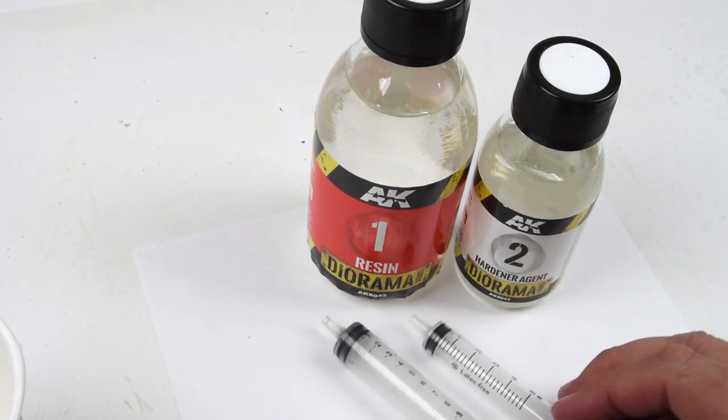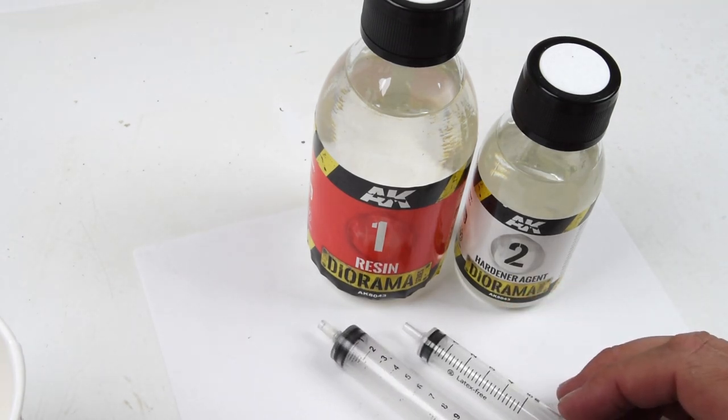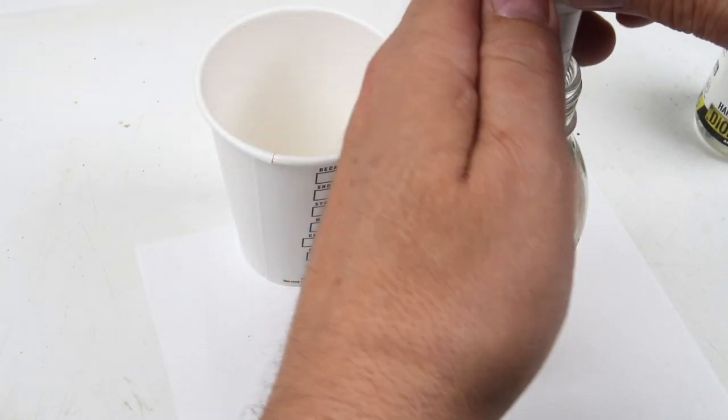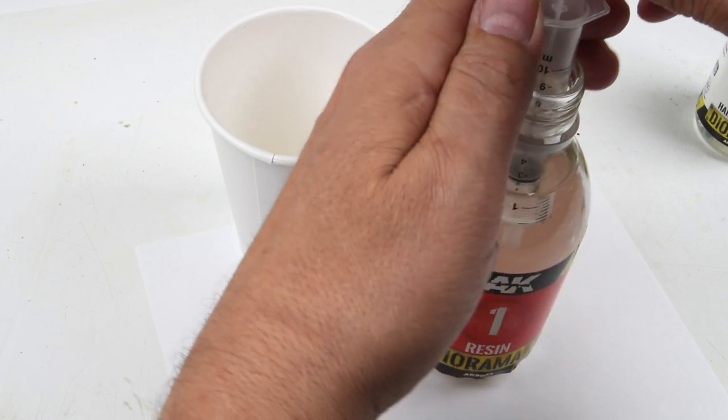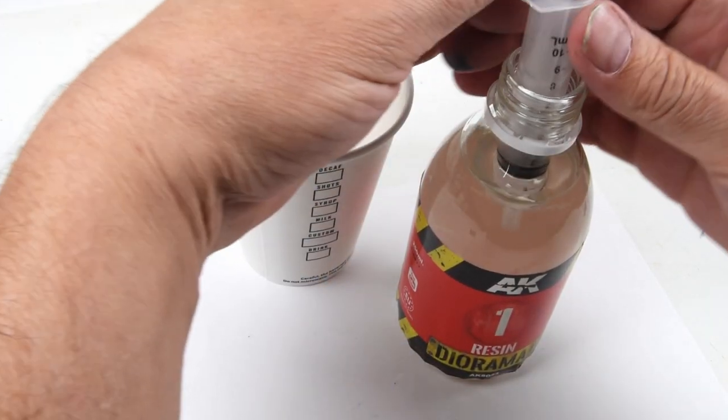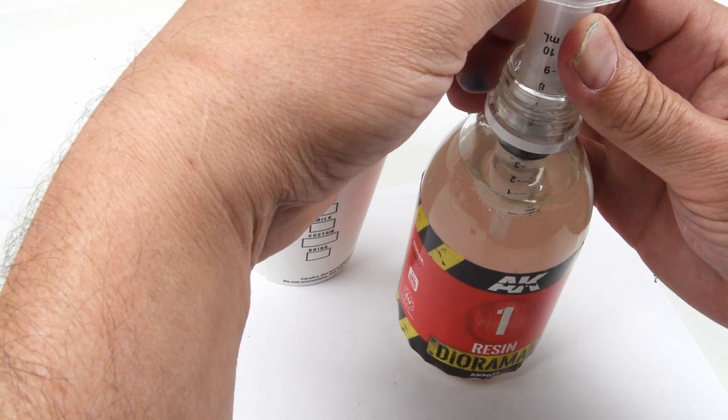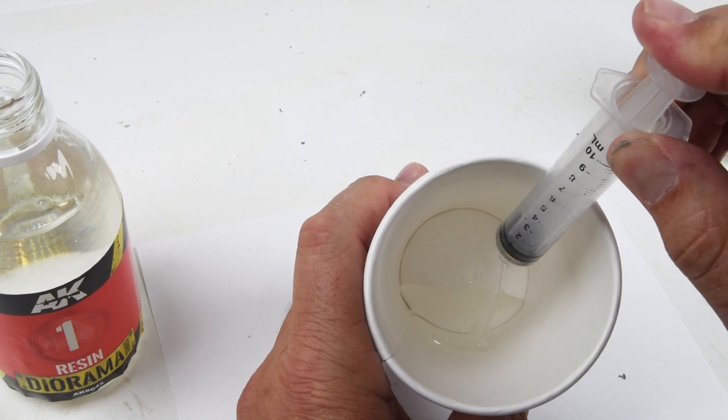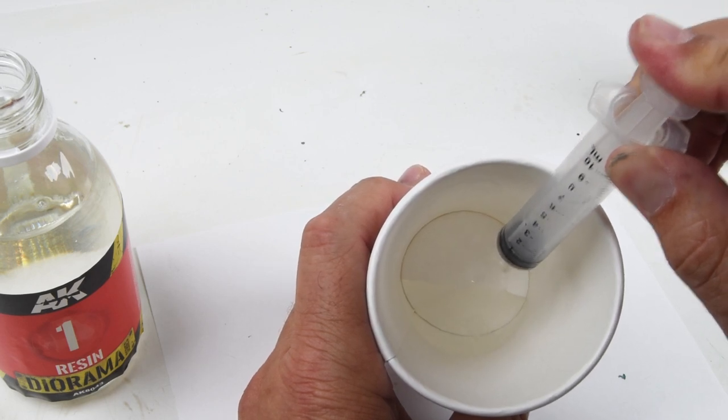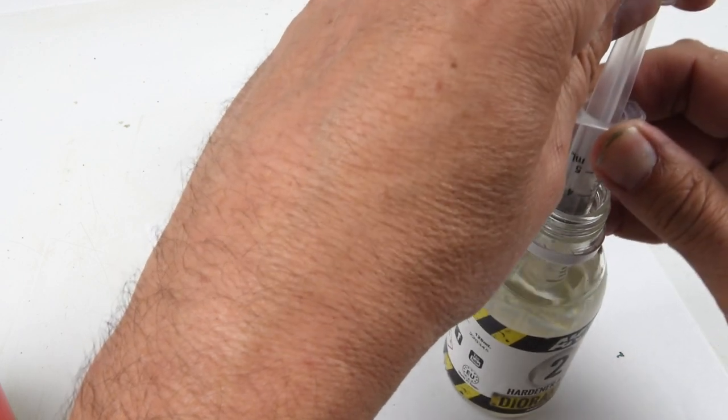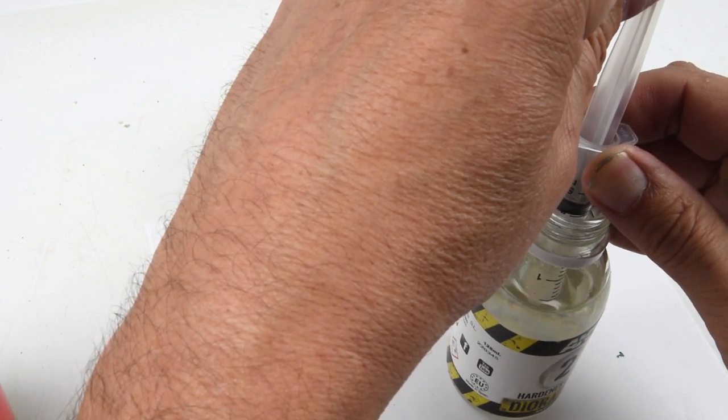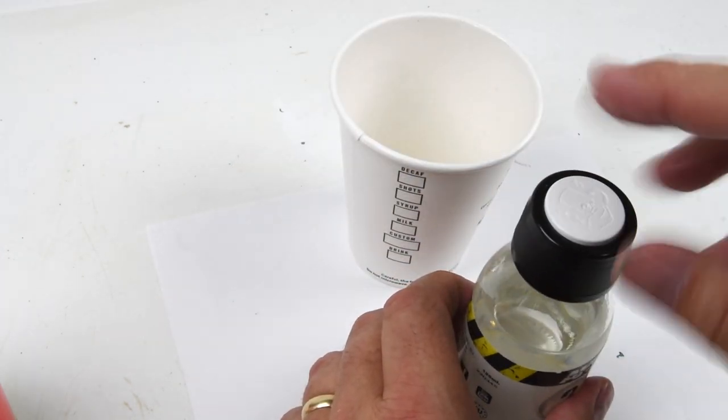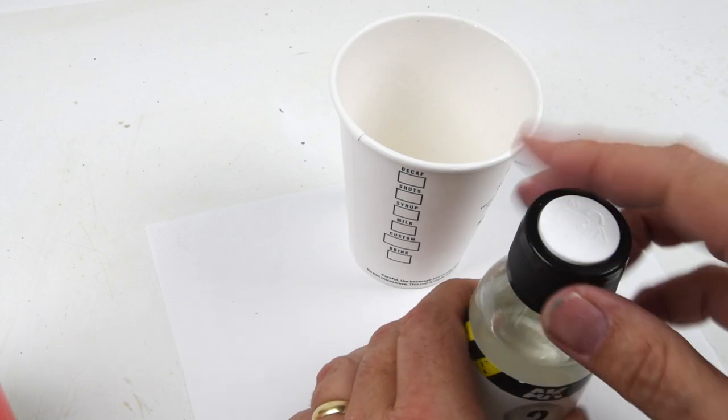Now if there was any time to really worry about me and how I approach things, it's going to be now because now we're working with resin. And this has got chemistry, it's got measuring, it's got icky, sticky stuff that can go everywhere, a lot of things that can go wrong. Luckily, it's a pretty simple process. Most commercial resins, and this is the AK resin, tend to be a two-to-one resin to catalyst. So one part catalyst to two parts resin. And I'm using the handy-dandy disposable cup from my local coffee shop. Get a stack of those and you'll be good to go. And safety tip number one here, once you're done working with the resins, put that cap back on because you do not want to spill this on your table, your floor, yourself, anything else.